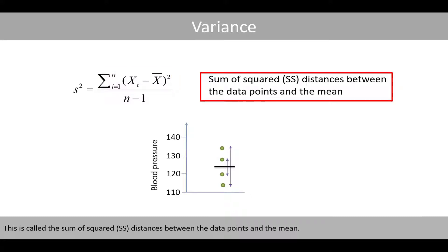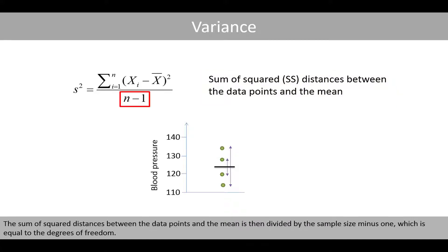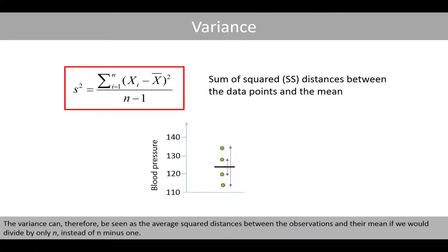This is called the sum of square distances between the data points and the mean. This sum is then divided by the sample size minus one, which is equal to the degrees of freedom. The variance can therefore be seen as the average square distances between the observations and the mean, if we divide by only n instead of n minus one.